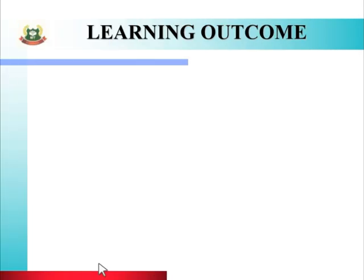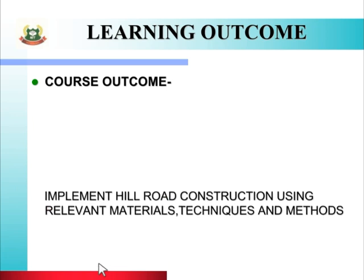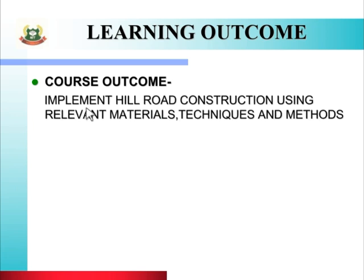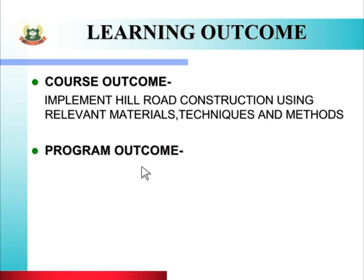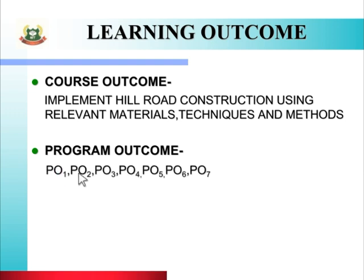First, let us see the course outcome: implement hill road construction using relevant materials, techniques, and methods. This means that after studying this unit, you will be able to describe the hill road construction process using suitable materials and techniques. Next is the program outcome. The program outcomes related to this topic are PO1 and PO2.